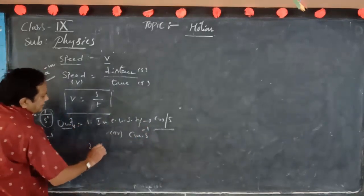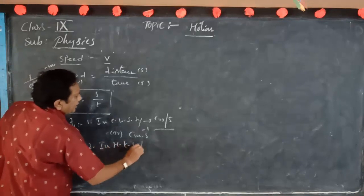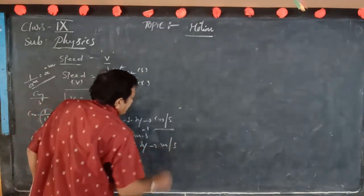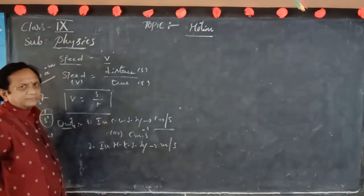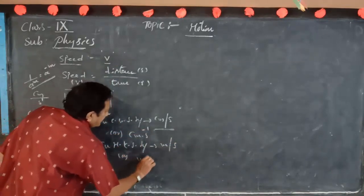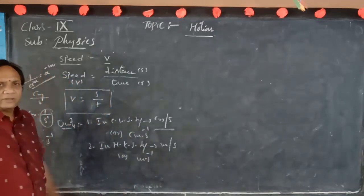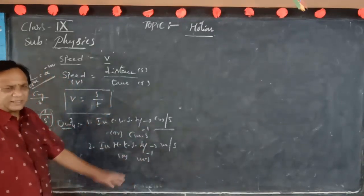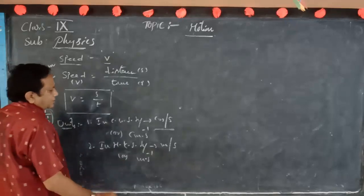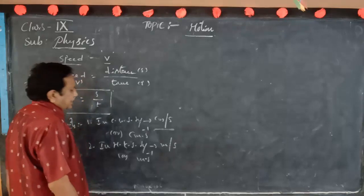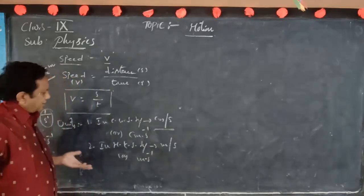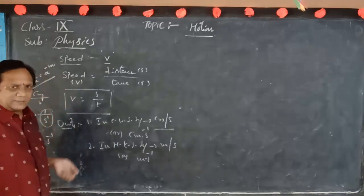In the MKS system, distance is measured in metres and time in seconds. So the unit is metre per second, or written as metre second to the power minus 1. Speed is also measured in kilometres per hour, which is another unit of speed.